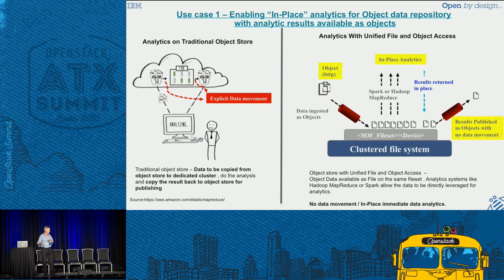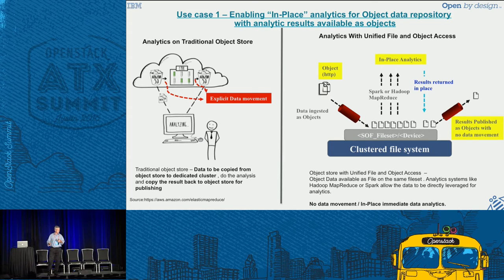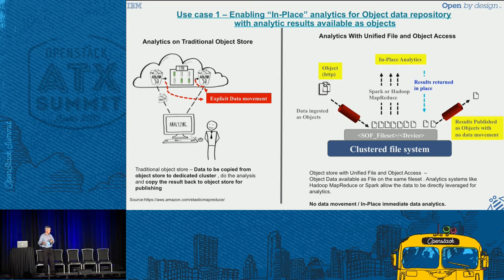With Swift on file, the data is ingested from the object interface in exactly the same way. Once it's there, I can access it directly — no copying of data. I access it directly using the POSIX or file system interface. When I'm done, I can publish my results back into the file system and they can be consumed from the object interface. So: ingest from object, process, and then publish through object.